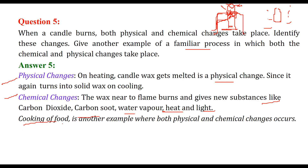Another example involving both physical and chemical changes is cooking of food. For example, cellulose cannot be digested directly, so we boil or cook the food so that it transforms into certain forms of carbohydrates. The chemical composition changes and the physical form is also changing.